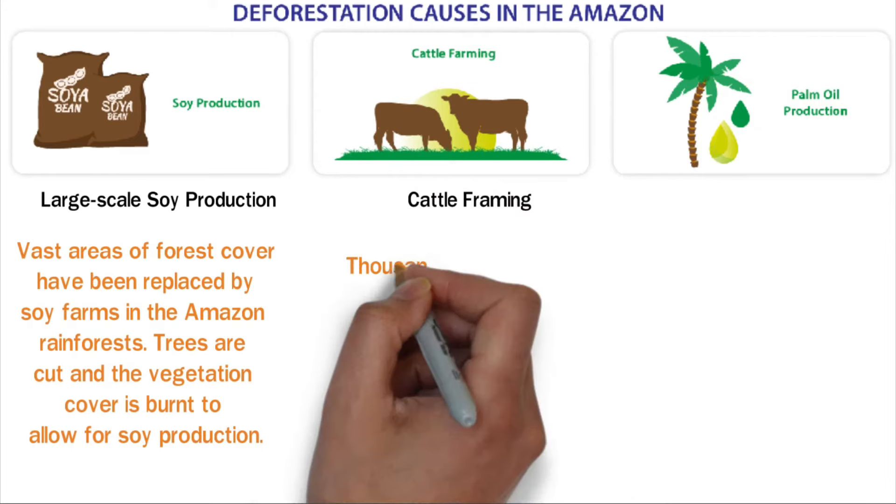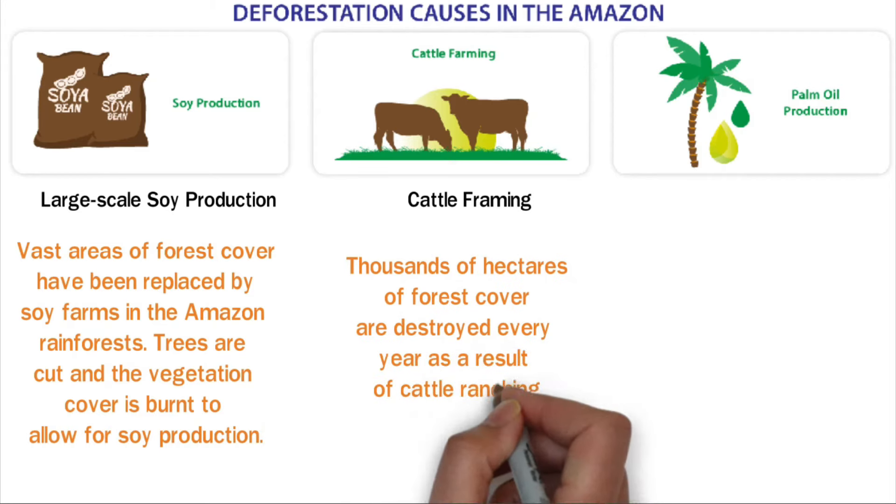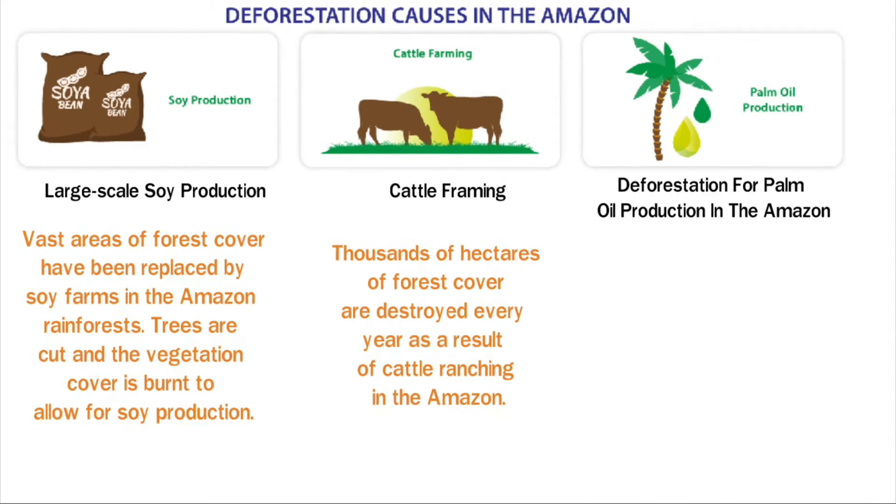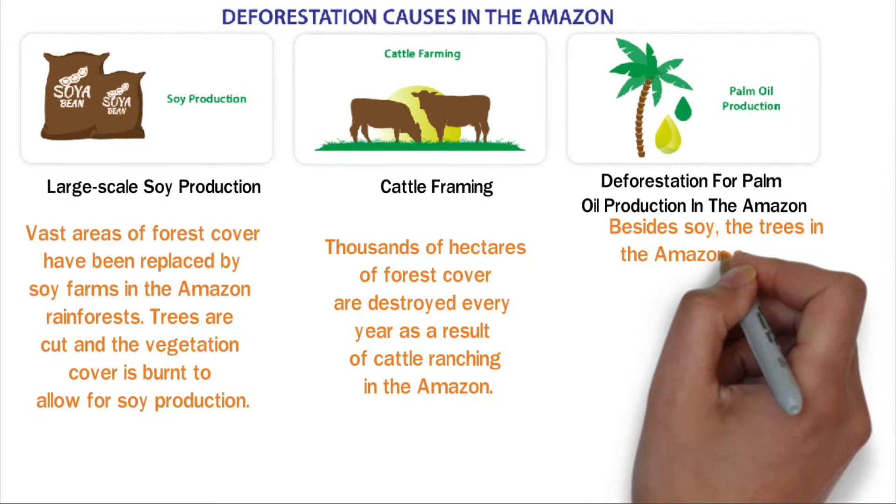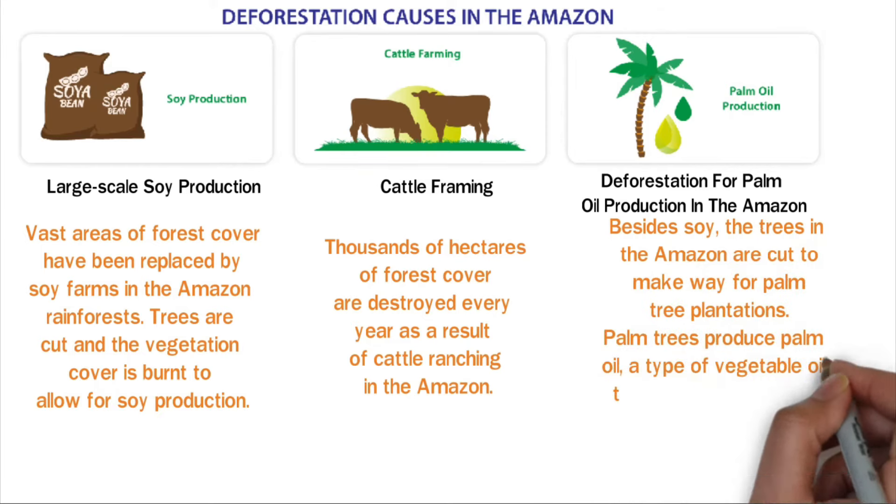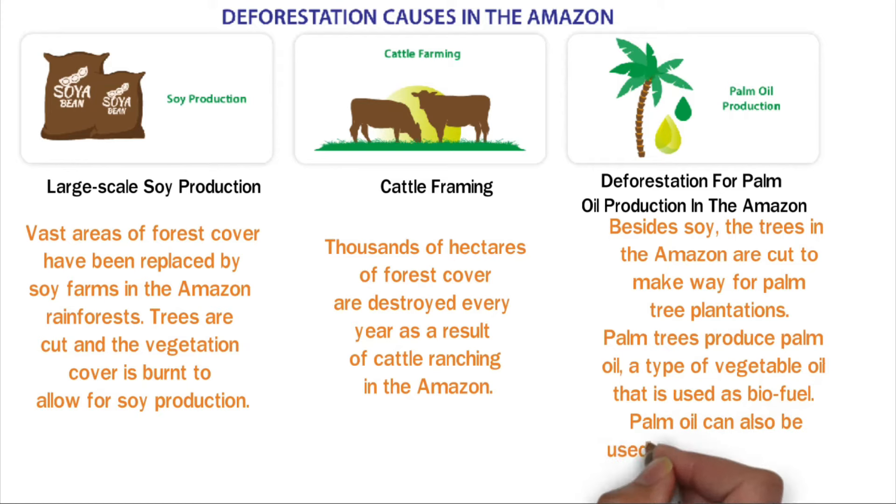Cattle farming: Thousands of hectares of forest cover are destroyed every year as a result of cattle ranching in the Amazon. Deforestation for palm oil production: Besides soy, the trees in the Amazon are cut to make way for palm tree plantations. Palm trees produce palm oil, a type of vegetable oil that is used as biofuel. Palm oil can also be used in the cosmetic and pharmaceutical industries.